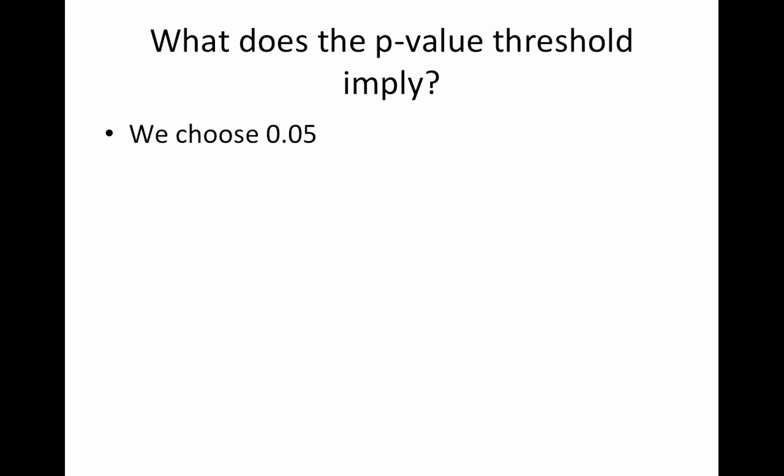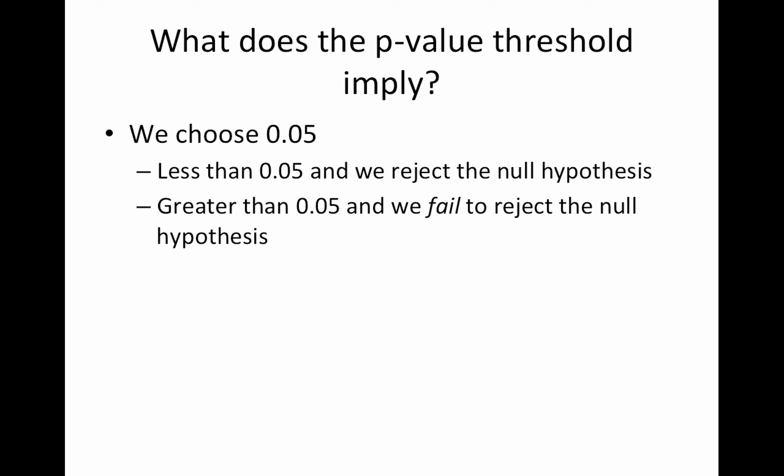So what does the p value threshold imply? That's what we're focused on today. We choose 0.05, just a historically driven choice. That means that if our p value is less than 0.05, we reject the null hypothesis. Greater than 0.05, we fail to reject the null hypothesis. Note how careful I am in wording this. I don't say we accept the null hypothesis because in frequentist statistics we can never accept the null hypothesis.